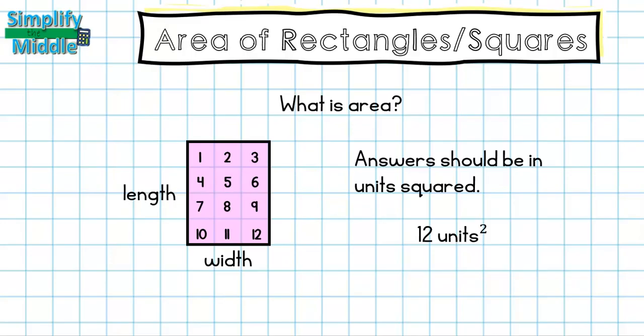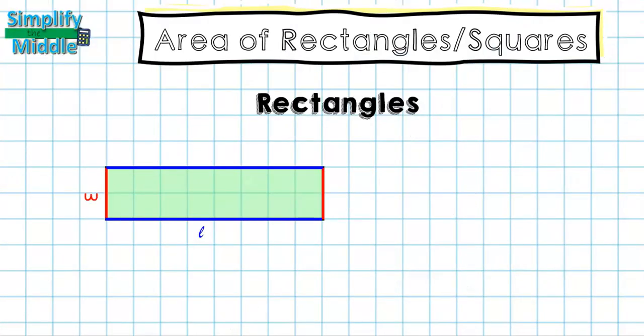If they gave me centimeters, feet, or so on, I would use that squared. Since they didn't give me the unit, I just use the word unit squared. Let's take a look at another example for rectangles.